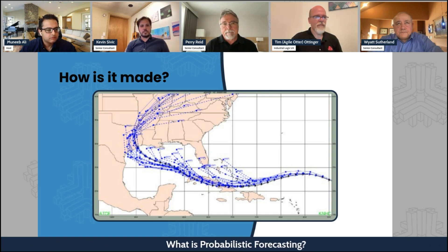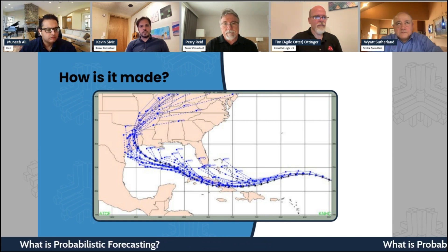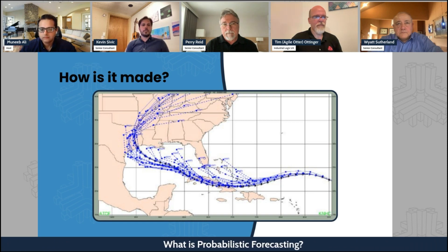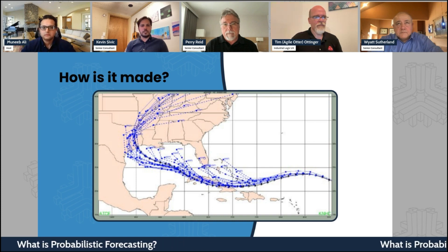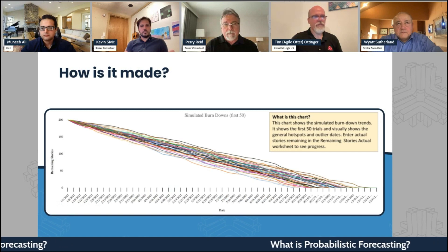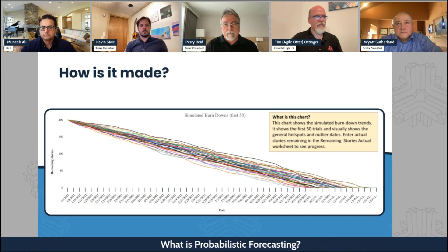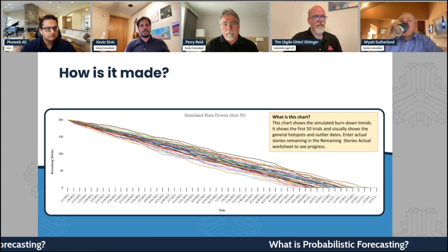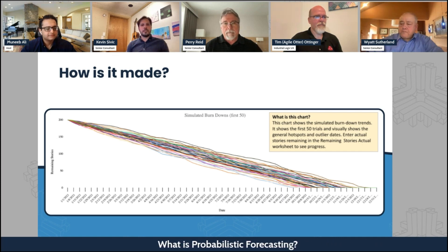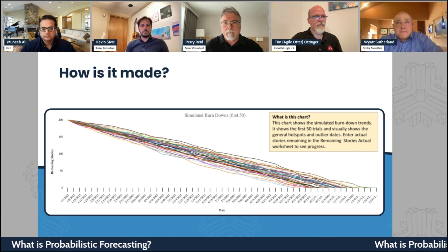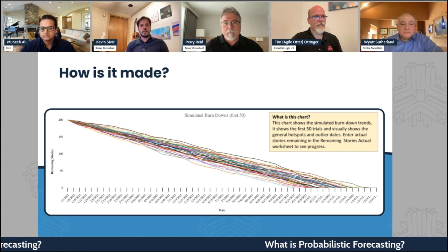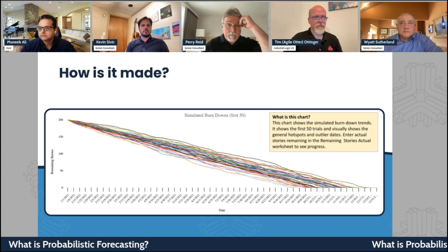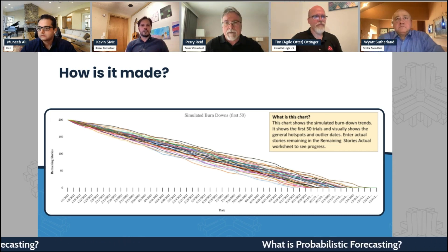They just update the forecast really frequently. We do something pretty similar to this for forecasting knowledge work — the type of work we do in building products — and we can generate pretty much exactly this chart. We're generating a spaghetti chart simulating burndowns. This is what a Monte Carlo forecast is: we simulate based on our historical data on how many things we've gotten done in the past, and simulate how many things we think we might get done in the future. We just pick a line — if we want 85% confidence, we say 85% of these simulations ended on or before this date. That's our forecast. That, in a nutshell, is what Monte Carlo forecasting really is.